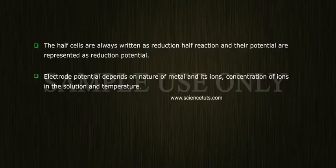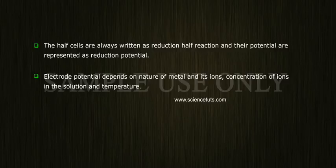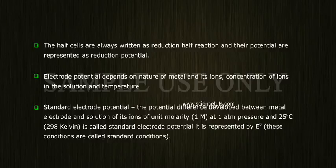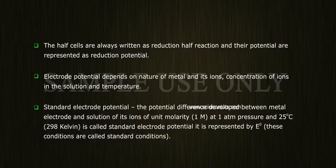Electrode potential depends on the nature of the metal and its ions, the concentration of ions in the solution, and temperature. Standard Electrode Potential: The potential difference developed between a metal electrode and a solution of its ions of unit molarity (1M) at 1 atmospheric pressure and 25 degrees centigrade (298 Kelvin) is called standard electrode potential.